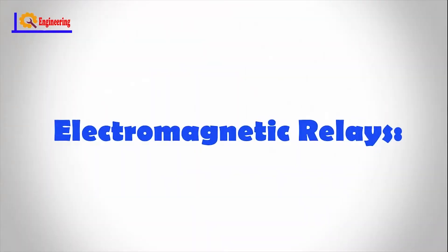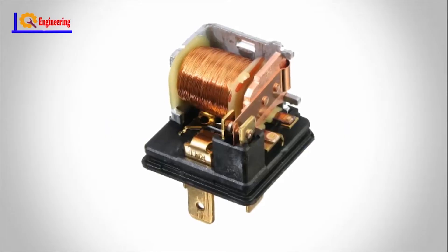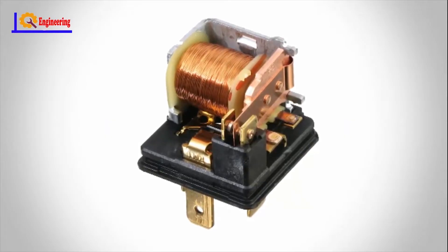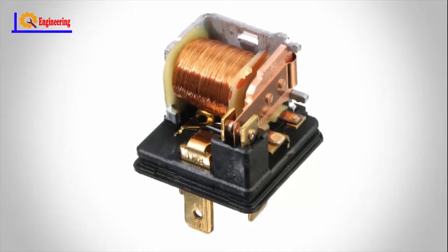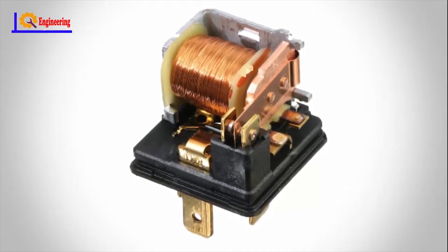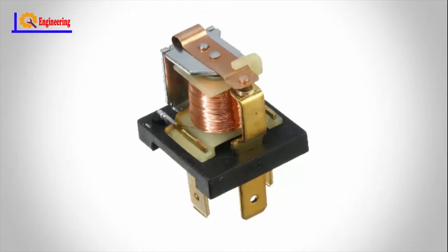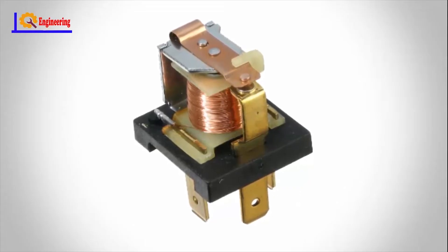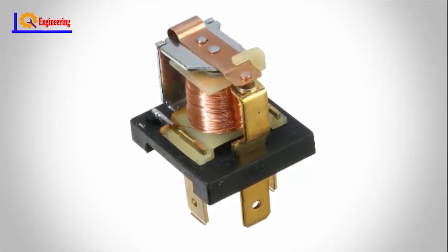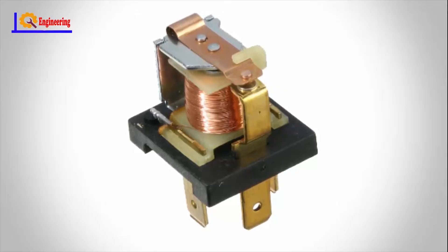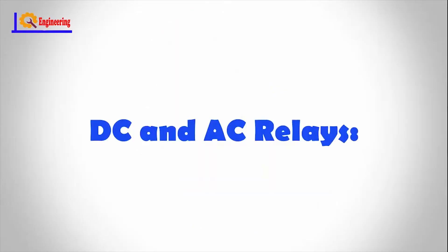Electromagnetic relays: these relays are constructed with electrical, mechanical, and magnetic components and have an operating coil and mechanical contacts. Therefore, when the coil gets activated by a supply system, these mechanical contacts get opened or closed.